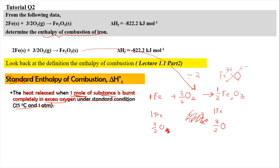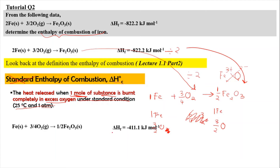Since everything is divided by 2, the enthalpy change is also divided by 2. So −822.2 ÷ 2 = −411.1 kJ/mol. The enthalpy of combustion of iron is therefore −411.1 kJ/mol. That's all for the tutorial video of section 2.1 of thermochemistry. See you again in the next video.